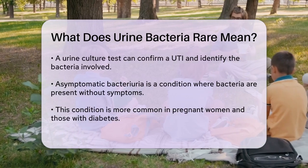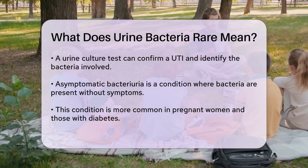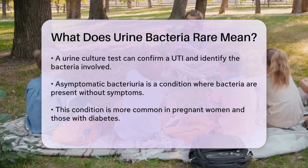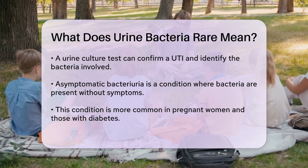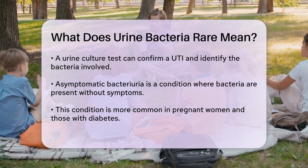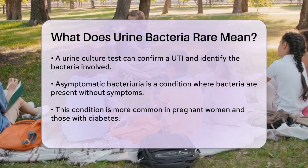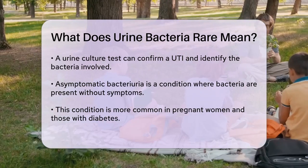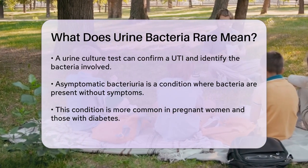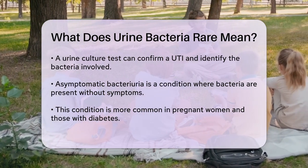Asymptomatic bacteriuria: sometimes bacteria can be present in the urine without any symptoms. This condition is known as asymptomatic bacteriuria. It's more common in women, especially those who are pregnant, sexually active, or have long-term diabetes. In most cases, asymptomatic bacteriuria does not require treatment unless you have underlying health conditions or are at risk for complications.